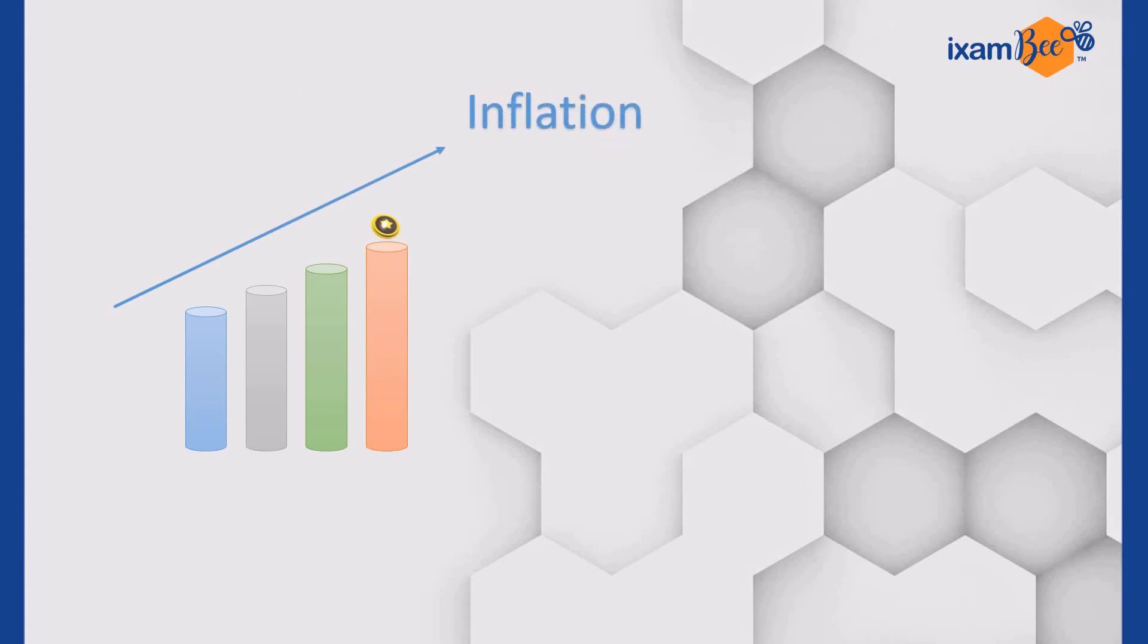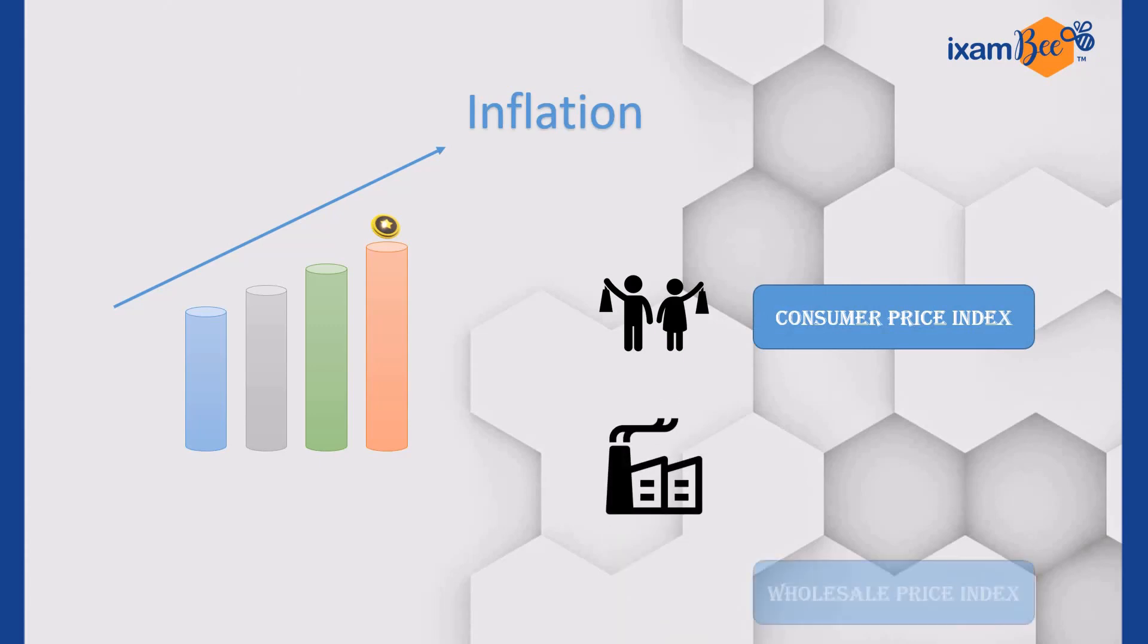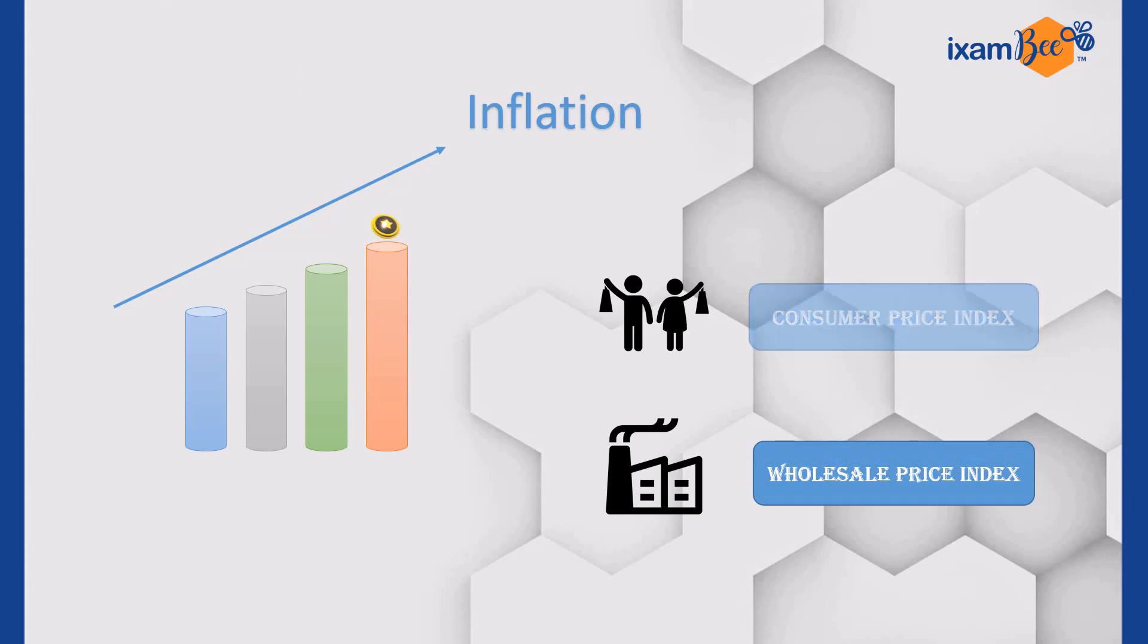Inflation is recorded at two levels. When it is recorded at consumer level, we call that the Consumer Price Index or CPI. When it is recorded at wholesale level, it is known as the Wholesale Price Index or WPI. In today's video, we will learn about Consumer Price Index or CPI.